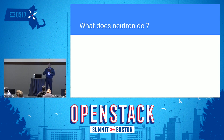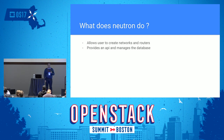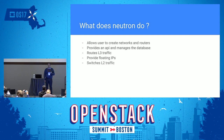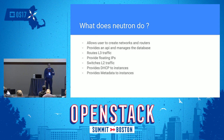Now that we understand the basic Linux native technologies, let's look at what Neutron actually does. Neutron allows users to create networks and routers. It provides an API for requesting services such as creating routers and networks, and manages a database on the back end. It routes layer 3 traffic for VMs, provides floating IPs, switches layer 2 MAC-address-based traffic, provides DHCP for instances, and provides metadata for instances such as injecting SSH keys.